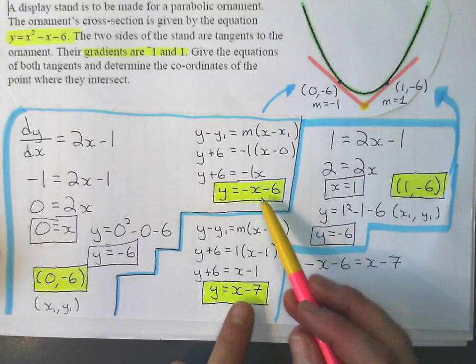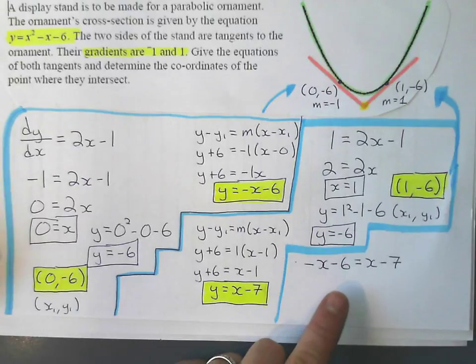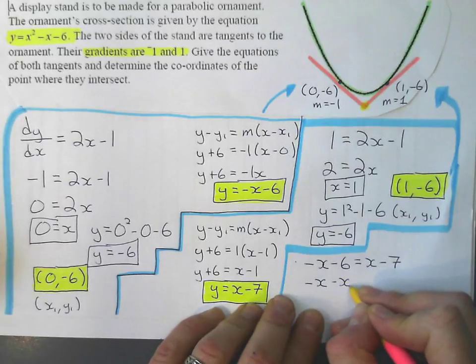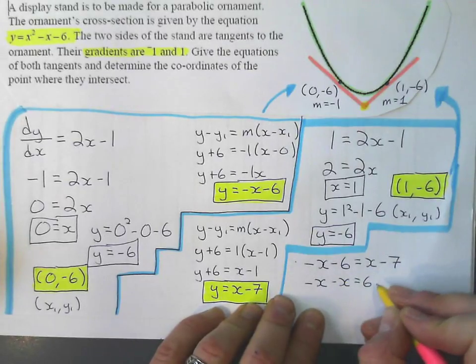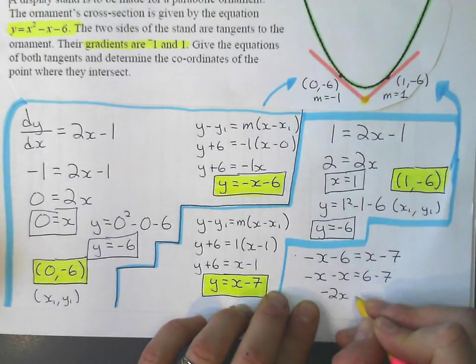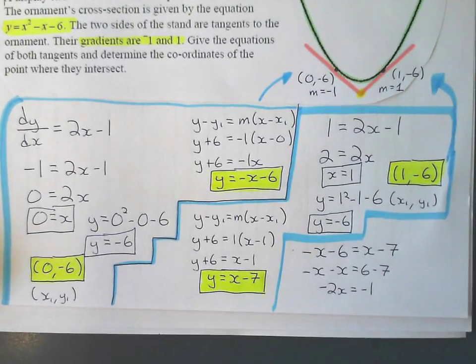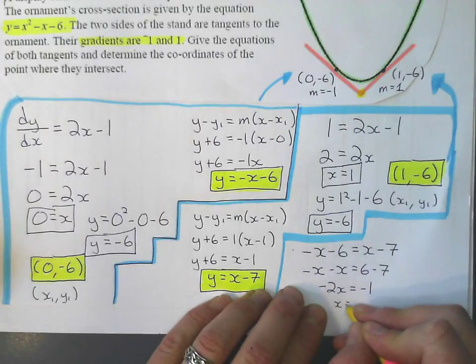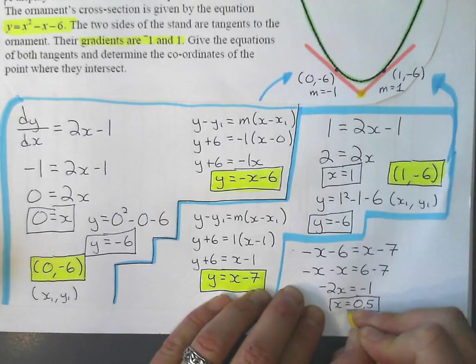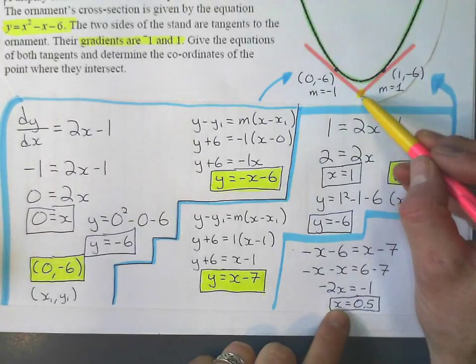So I set these two expressions equal to each other because they're both equal to y. And now I'm going to solve for x. I can swap these two terms around and get -x - x = 6 - 7. And I get -2x = -1. And so the value of x will give me -1 ÷ -2 = 0.5. So that's 0.5 something.